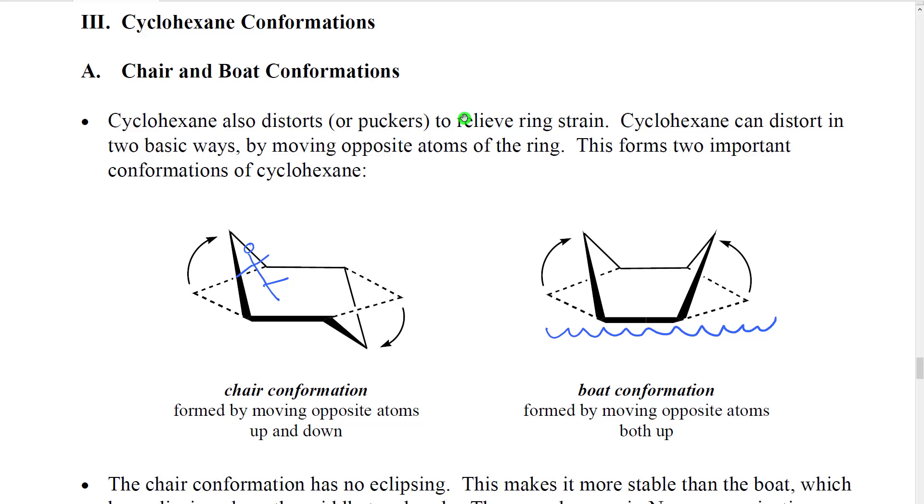Finally, we're going to look at the cyclohexane conformations. Cyclohexane is an incredibly important molecule. It's found in a wide variety of biological molecules. It forms the basis for all of our metabolism in the form of glucose, which is a six-membered ring molecule.